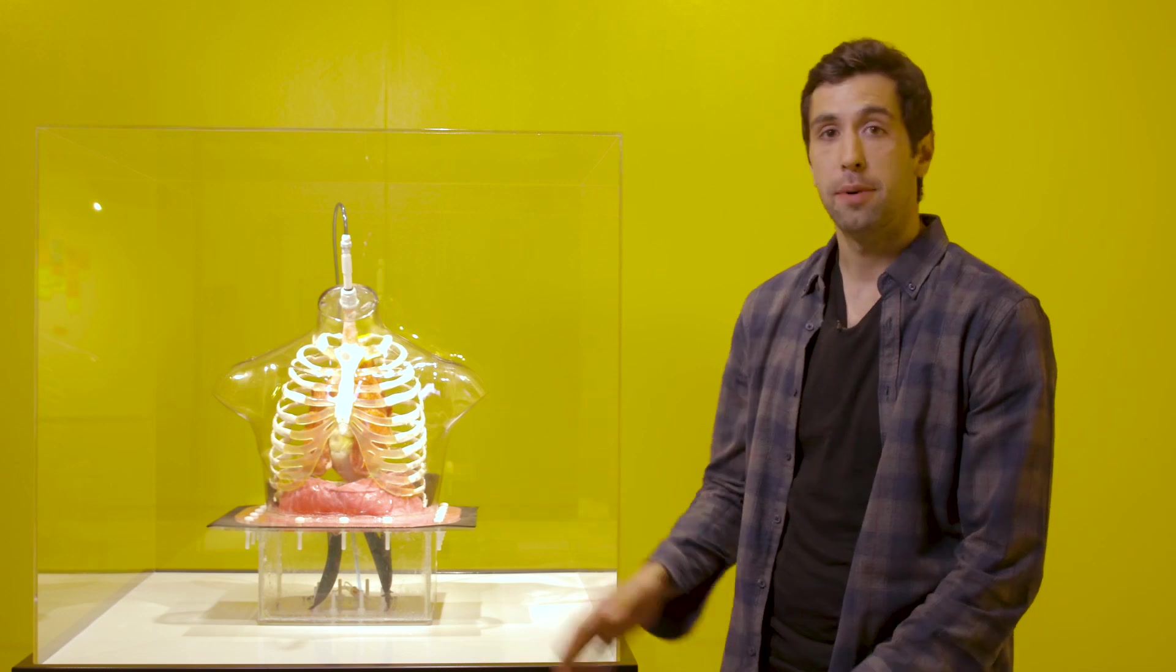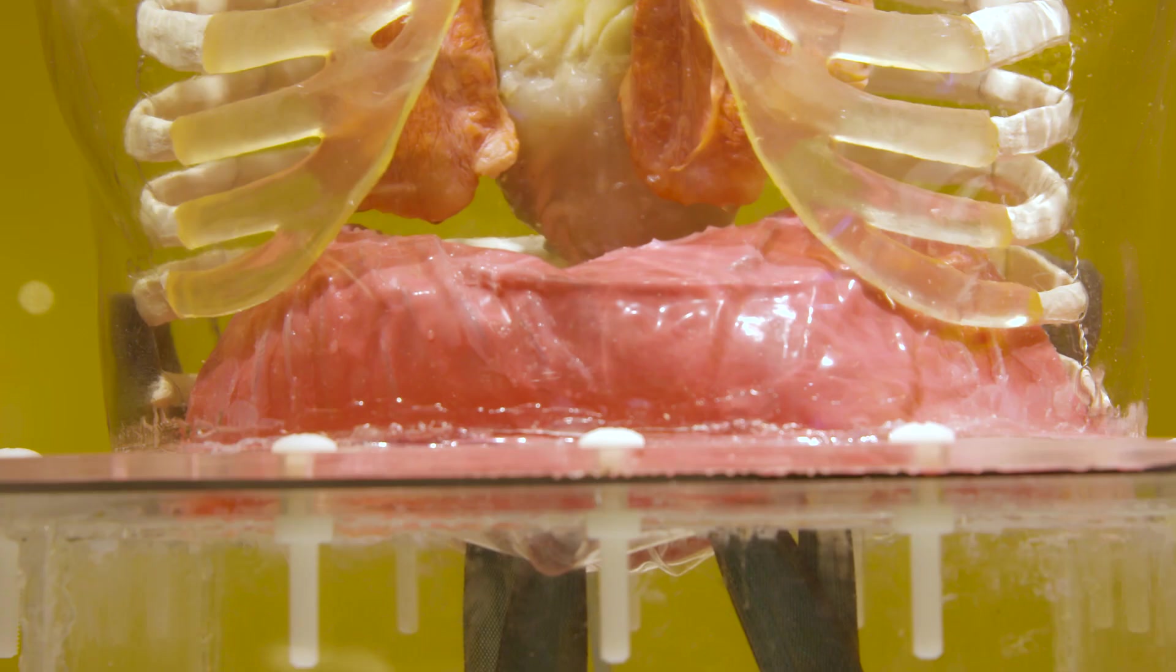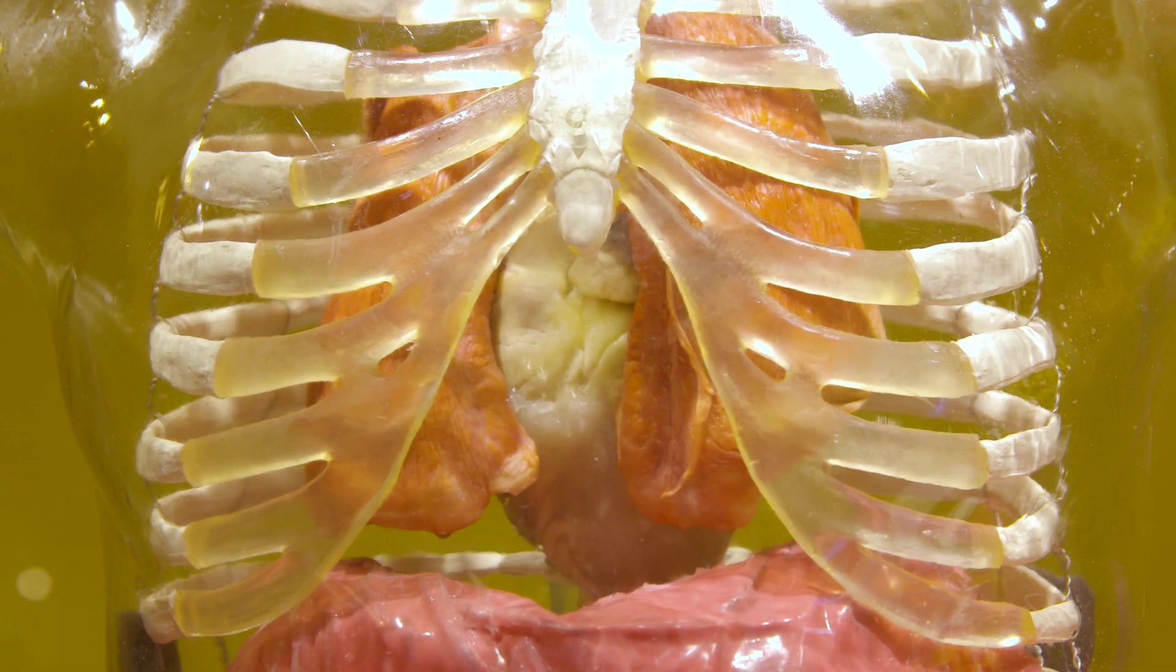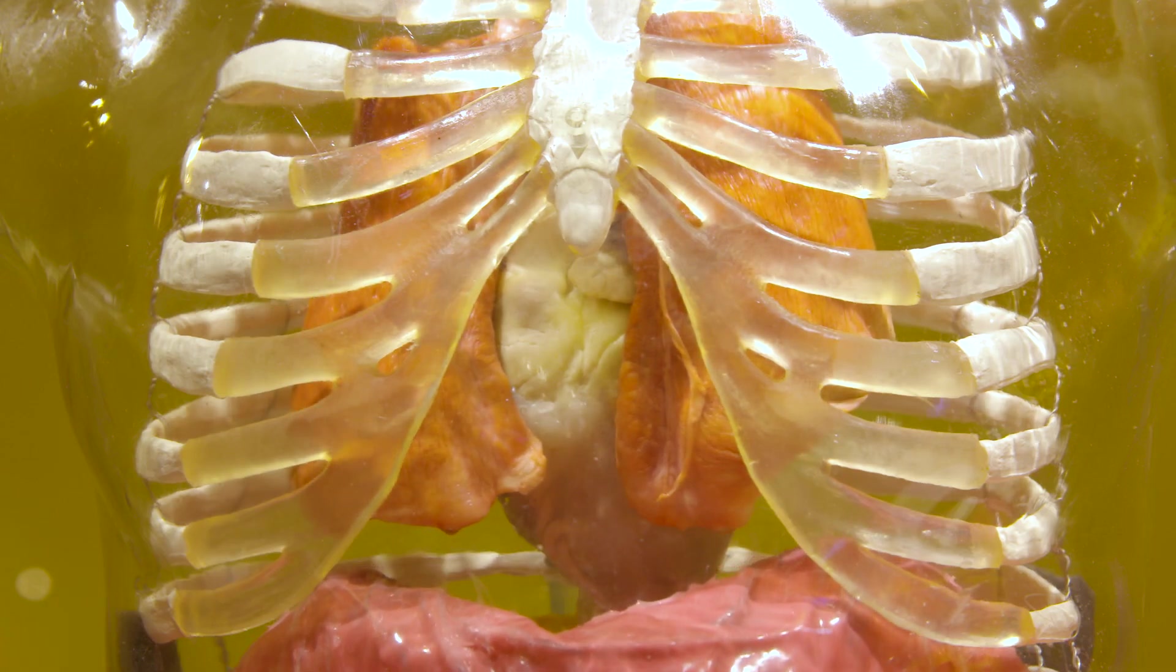In the bottom we have soft robotic muscles that pull down the diaphragm, and pulling down the diaphragm drops the pressure in the chest on top that expands the lungs and sucks in air from the top just like we breathe.